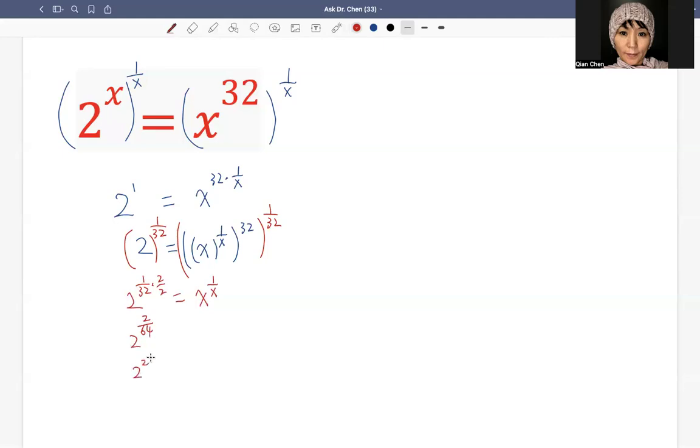We can write as 2 squared raised by 1 over 64. That's x raised by 1 over x on the right hand side. So now that's 4 raised by 1 over 64 equals to x raised by 1 over x.